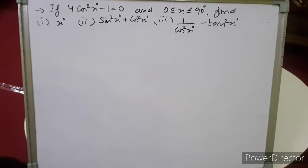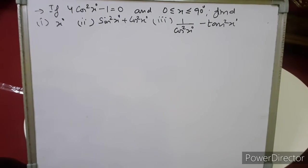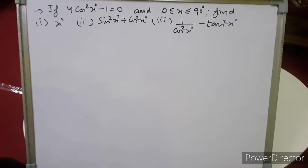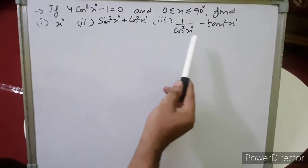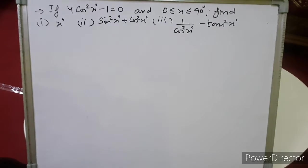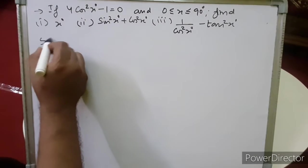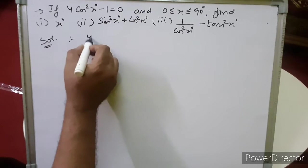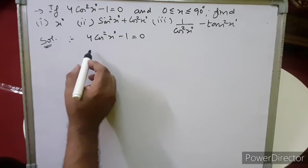Now, given 4cos²x − 1 = 0, where x is between 0° and 90°, find the values of: x; sin²x + cos²x; and 1/cos²x − tan²x. Let us start by calculating the value of x.